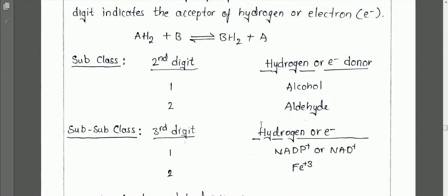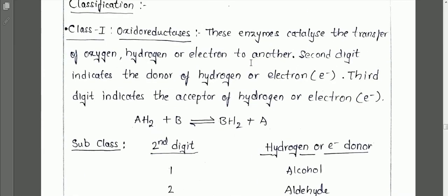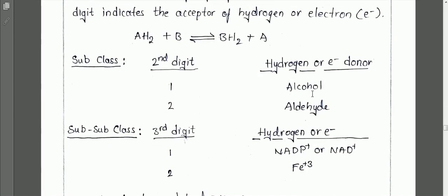The general reaction of class one enzymes is: AH2 + B → BH2 + A. One hydrogen molecule is transferred from component A to component B, resulting in the formation of BH2 plus A.